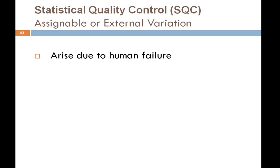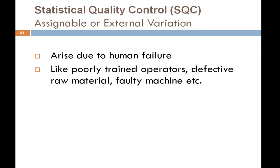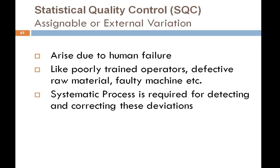The second type is assignable or external variation, which talks about deviations due to human failure. Where natural or by-chance variation is absent, the remaining deviation is due to human failure. Reasons can include poorly trained operators, defective raw materials, faulty machines, and so on. A systematic process is required for detecting and correcting these deviations. We cannot eliminate chance variations — we treat them as an integral part and accept them within range — but assignable or external variations can be controlled by identifying and correcting their causes.